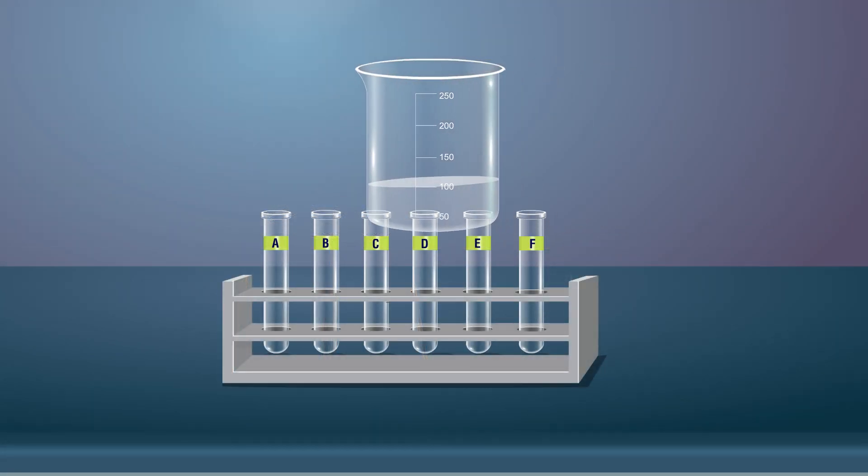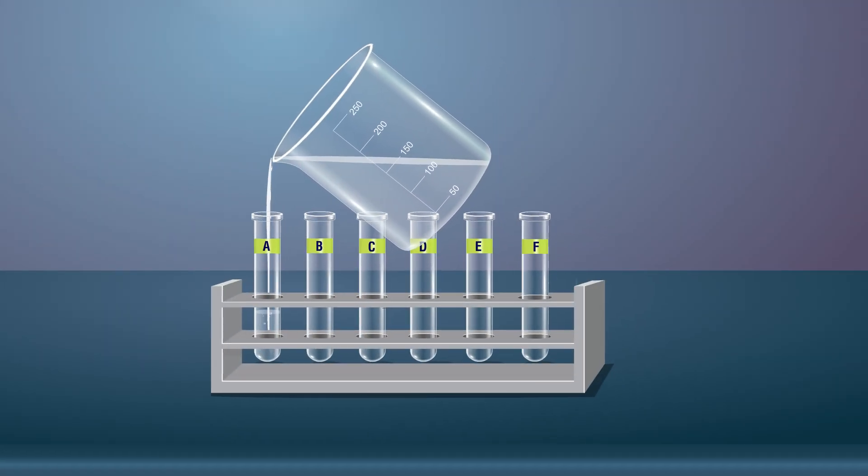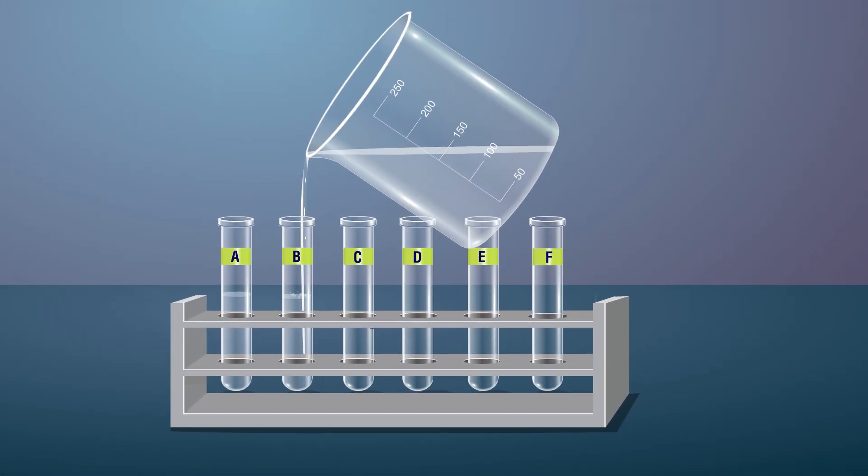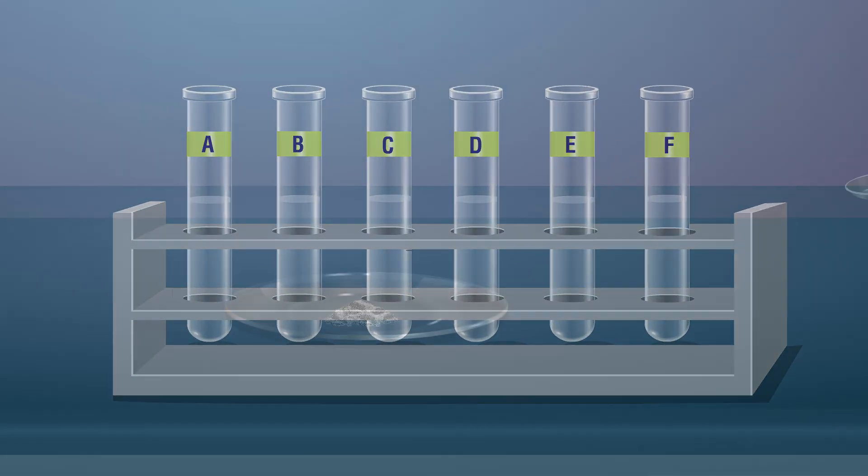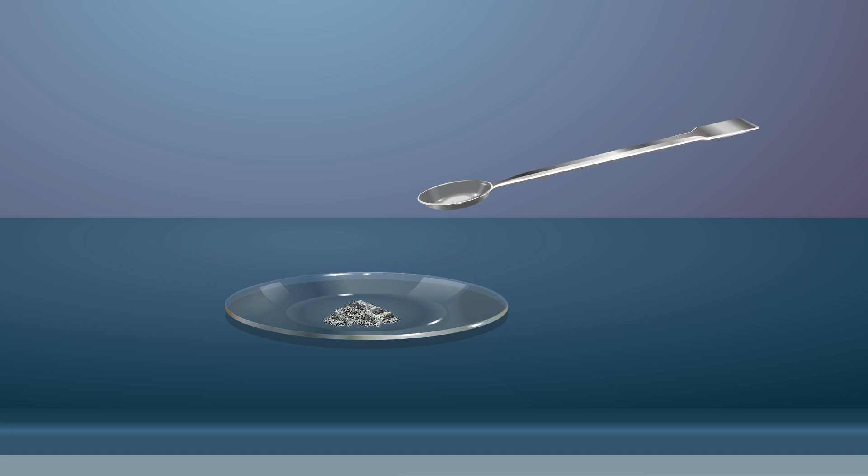Take six test tubes labeled A, B, C, D, E, and F, half-filled with boiled water.